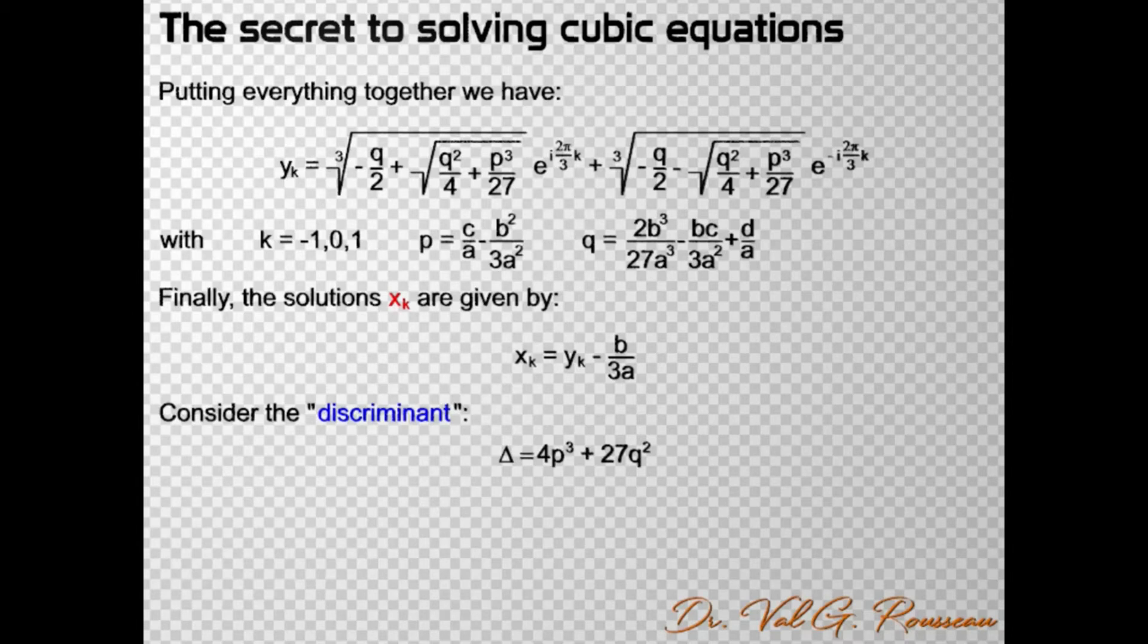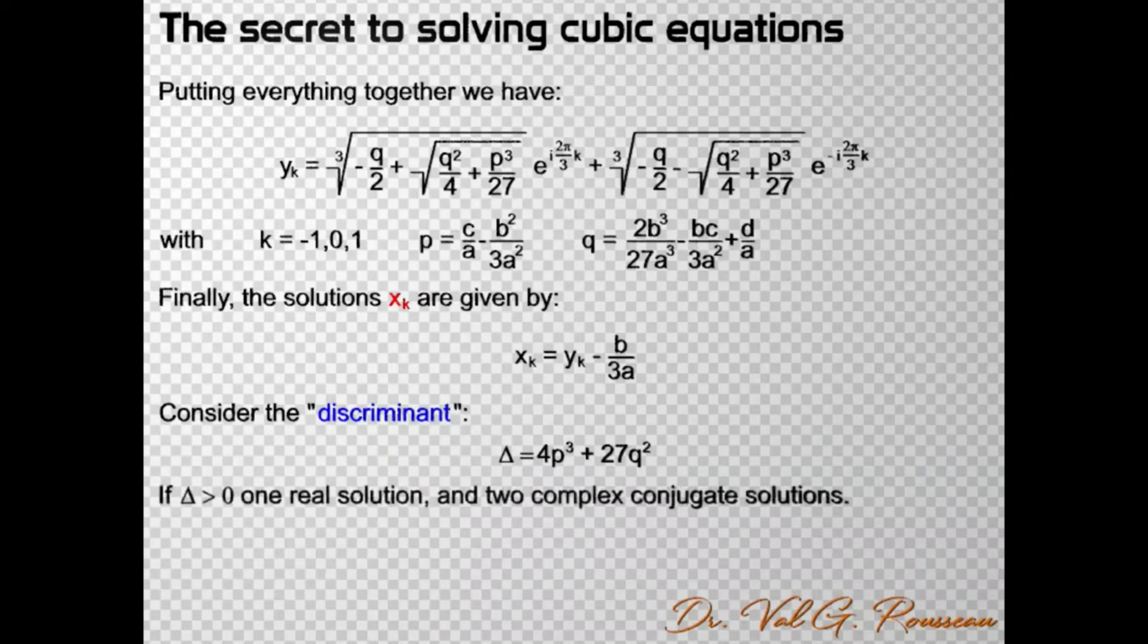So, we see in the expression of y that if Δ > 0, then the two cubic roots are two distinct real numbers. But these cubic roots are each multiplied by conjugate imaginary exponentials except if k = 0. As a result, if Δ is positive, we have one real solution corresponding to k = 0 and two complex conjugate solutions for k = 1 and k = -1.